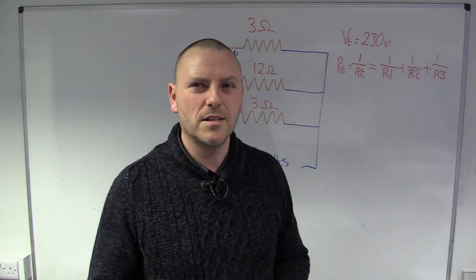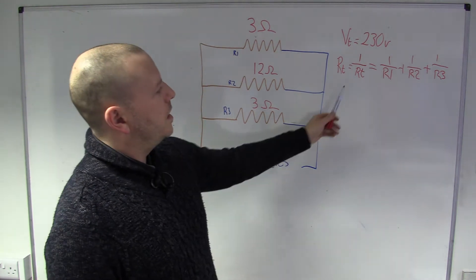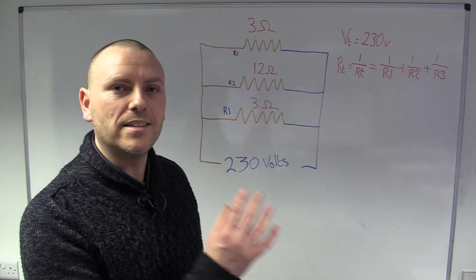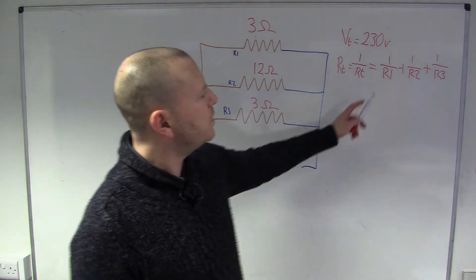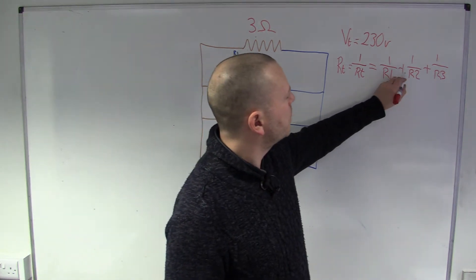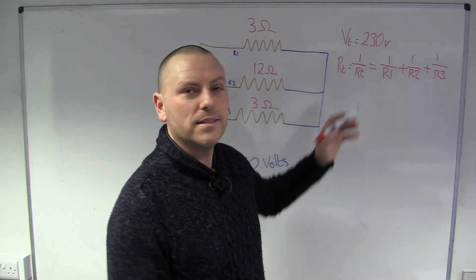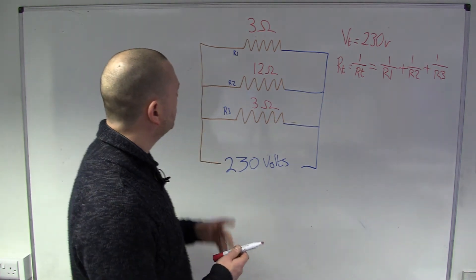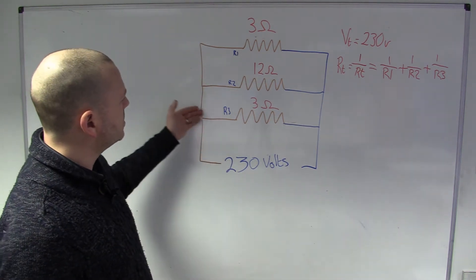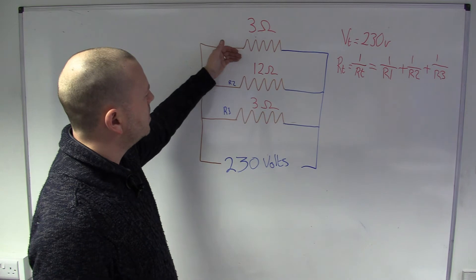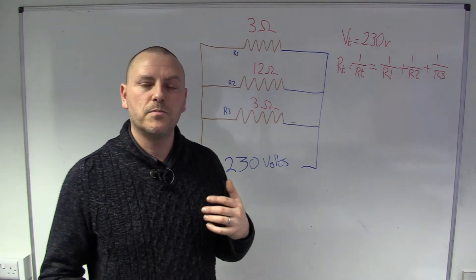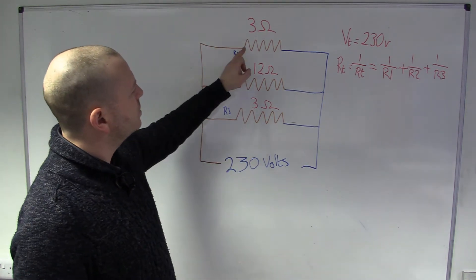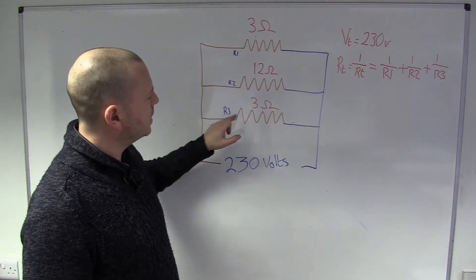Why so different? In the last series circuit, we just added them up — and we're still adding them up, but we're adding their inverted values. The reason is because the voltage is the same up until this point, and then it's going to create a different current based on whatever's in the way.